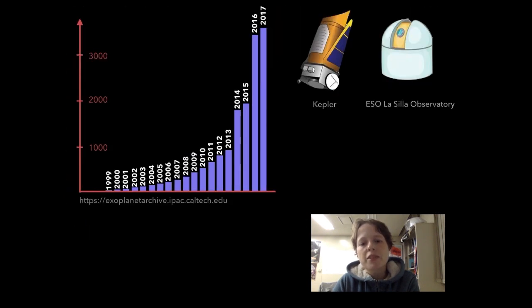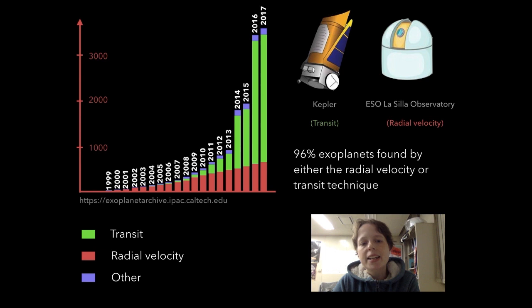The majority of planets we have discovered so far have been found by one of two techniques: the radial velocity technique used by ground-based telescopes such as the ESO Observatory in Chile, or the transit technique used by instruments such as the Kepler Space Telescope and its successor TESS.